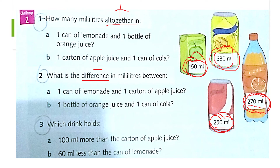Question three: which drink holds 100 milliliters more than the carton of apple juice? 'More than' means you have to add. Apple juice is 150 milliliters, so calculate 100 mL plus 150 mL, then look at the images here and find which picture matches that answer.